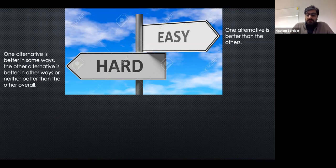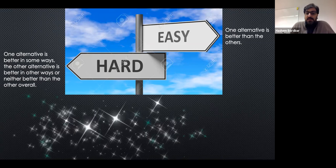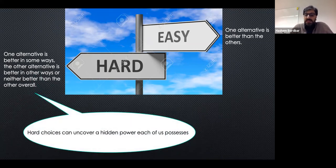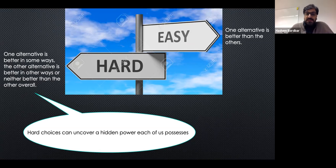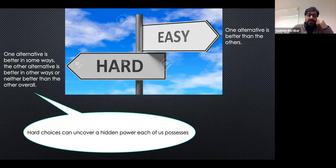Hard choices are hard not because of us or our ignorance — they are hard because there is no best option. But hard choices help humans find themselves better; our choices can uncover a hidden power in each of us. If all alternatives are equally good, you could flip a coin. But if you look at very successful people in the world, they are not succeeding by flipping a coin — they think about the problem very well. It is a mistake to think we can choose our partner, our profession, and other important choices by chance.